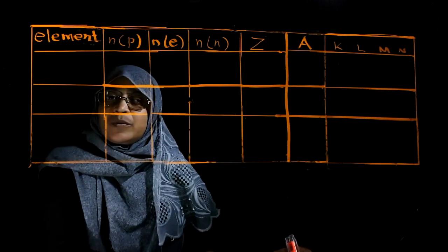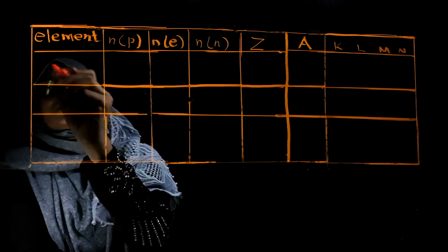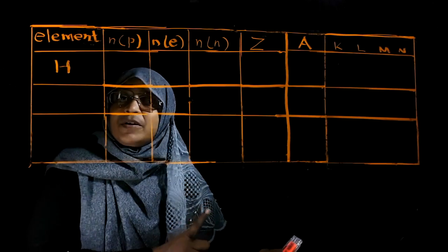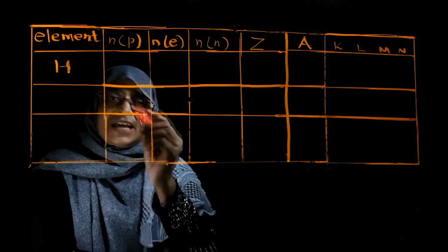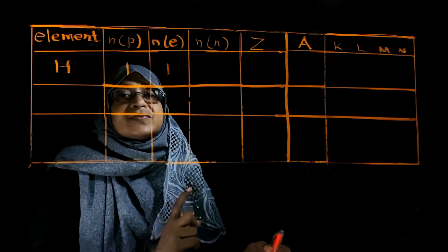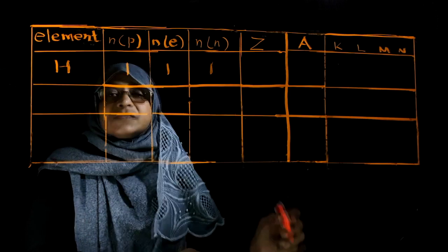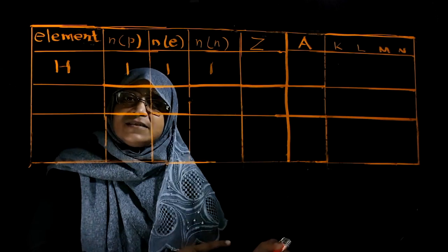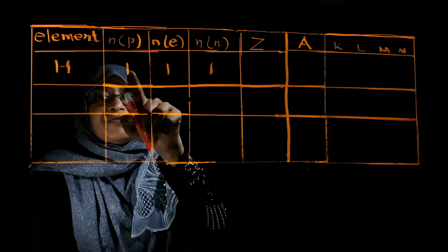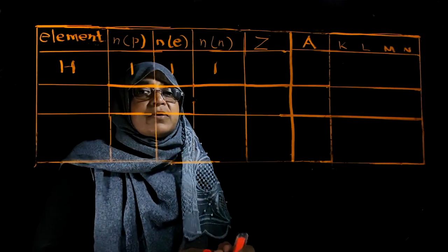Now let us see the first example: hydrogen. The symbol of hydrogen is H. The number of protons in hydrogen is 1, the number of electrons is 1, and the number of neutrons is 1. The atomic number Z is the number of protons, which is 1. So the atomic number of hydrogen is 1.